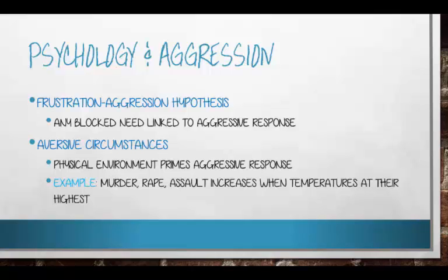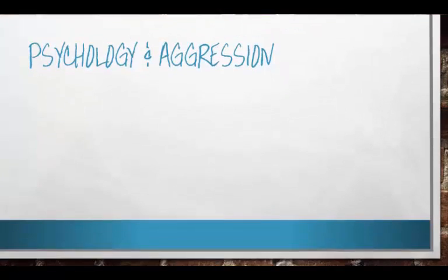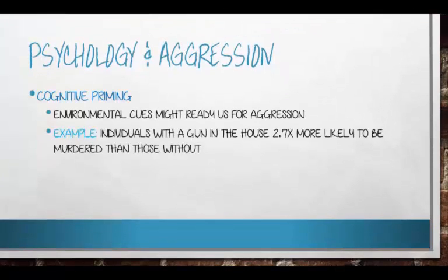Priming — the idea that I can bring up information that makes you think or feel a certain way — also seems to be a good indicator of where aggression comes from. Individuals with a gun in the house are 2.7 times more likely to be murdered than those without. This isn't a pro- or anti-gun statement, but consider the concept of priming: if there's an object nearby that represents aggression, would we be more likely to be aggressive? Studies have demonstrated this. Students were paired up to debate hot issues like abortion, politics, and religion.